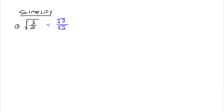Rationalizing the denominator means making the denominator not have any radicals in it, which means that the denominator becomes a rational number, hence the phrase rationalize the denominator. So to do that, we look at the denominator and the root — we have the square root of 2. We know that we can multiply a fraction by pretty much anything we want as long as we multiply it to the top and the bottom of that fraction. We can't multiply top and bottom by 0, but just about everything else is okay.